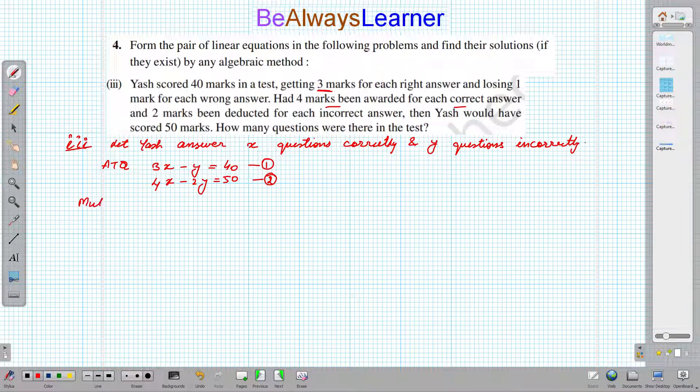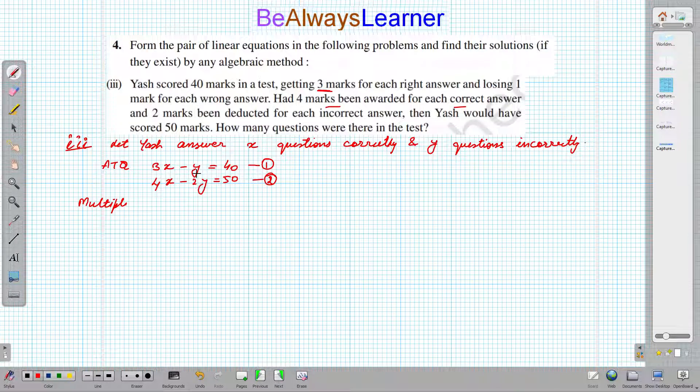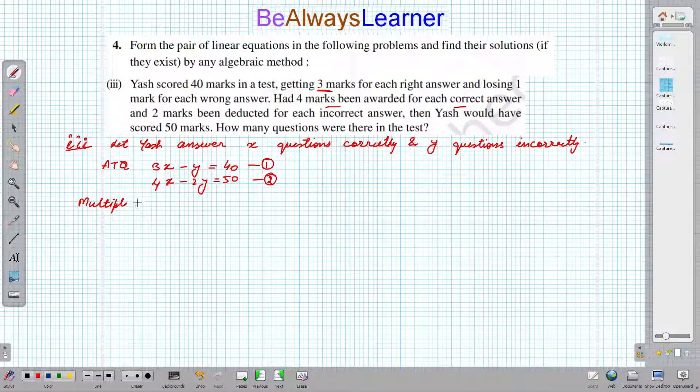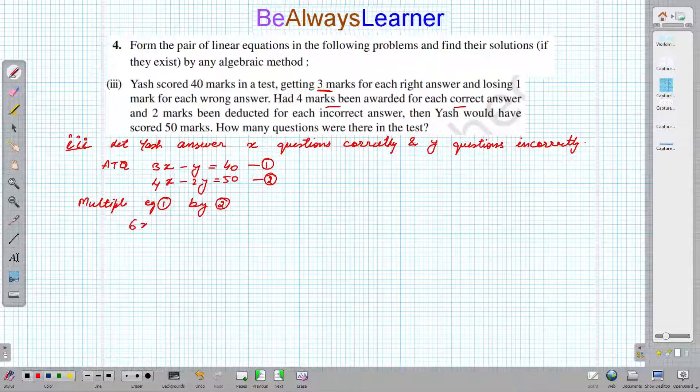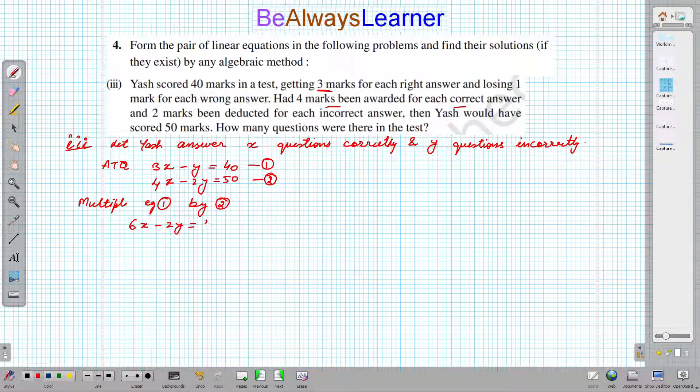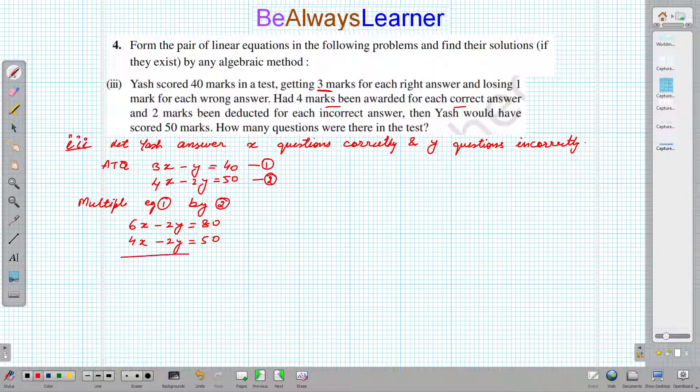Using elimination method, we can multiply. Because if y is here, there is 1 and here is 2. So if we multiply the first equation by 2, this y will be equal to y. Multiply equation 1 by 2: 6x minus 2y equals 80. 4x minus 2y equals 50.